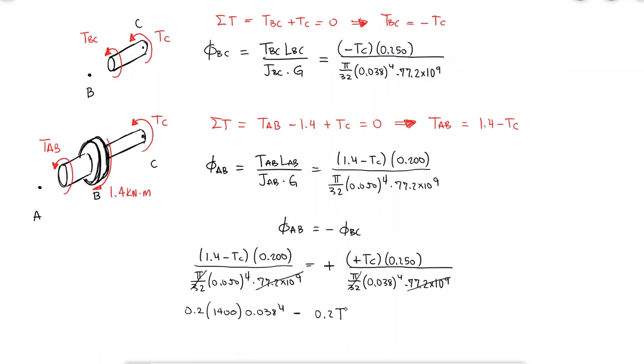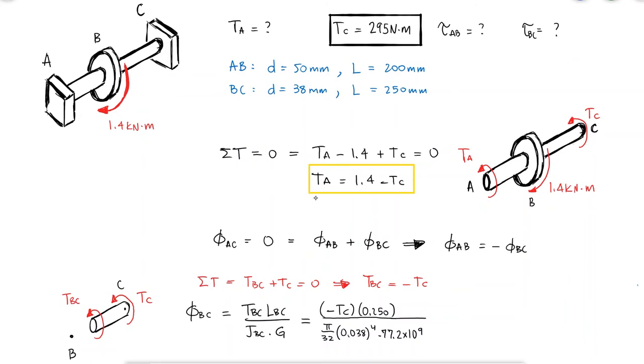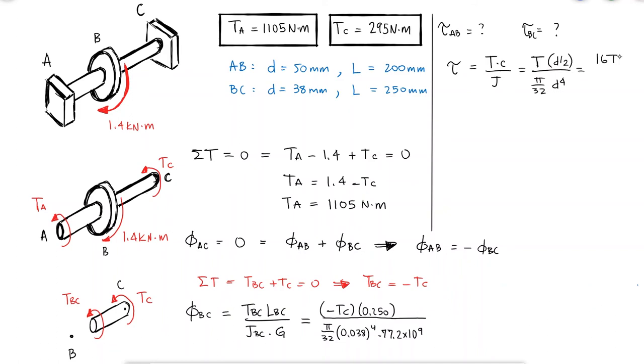Using the relationship between the angles of twist, we find that the value for TC is 295 Nm. With this information I can go back to the original sum of torque equation and solve for TA.